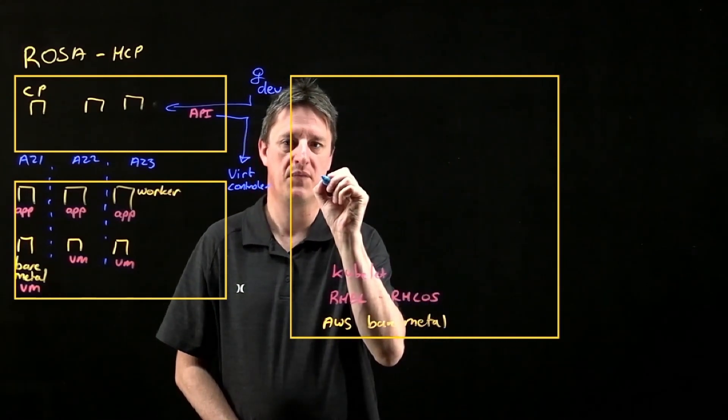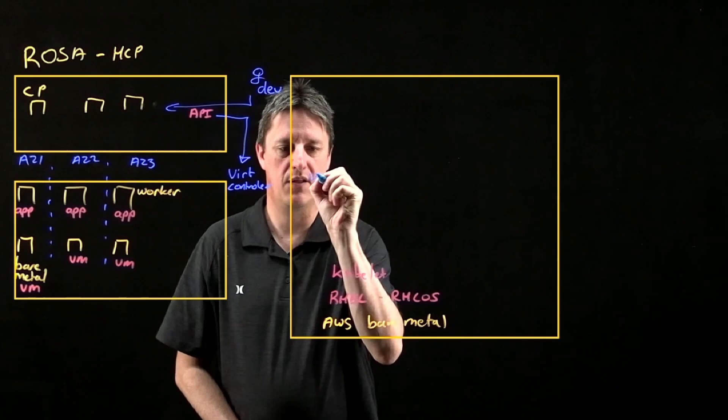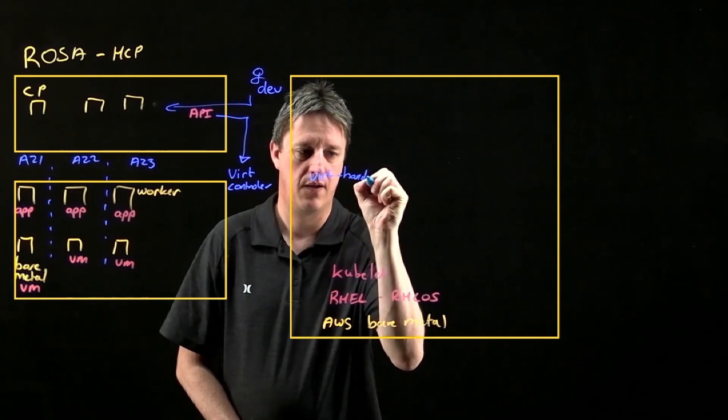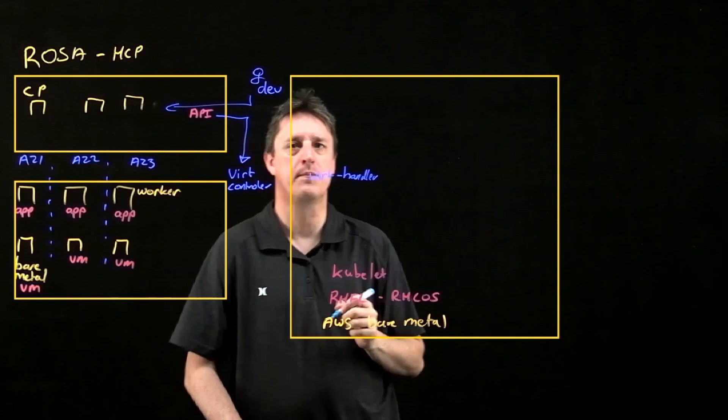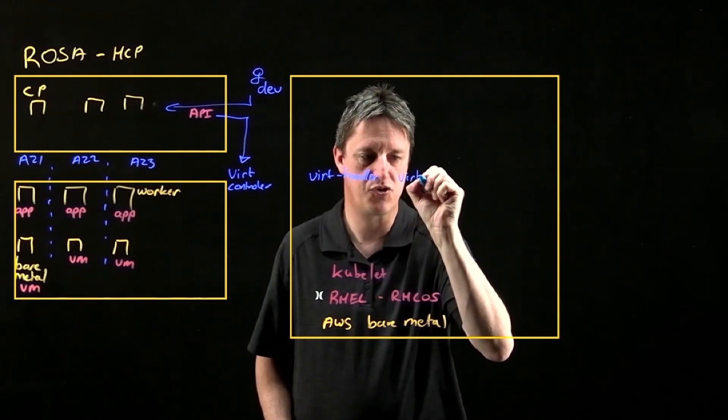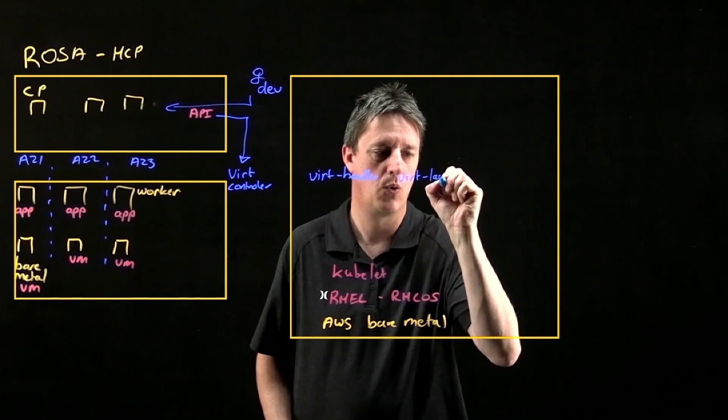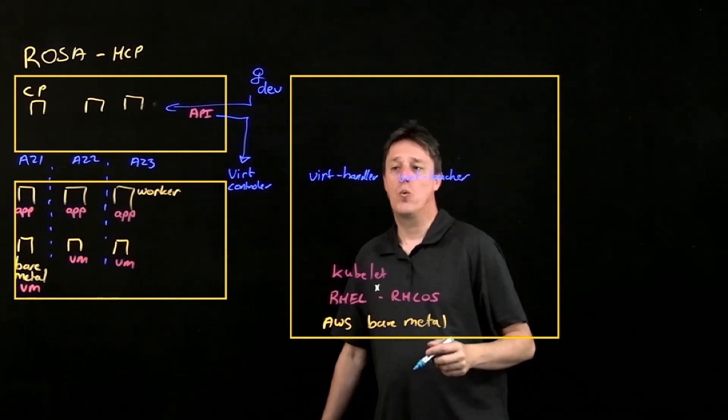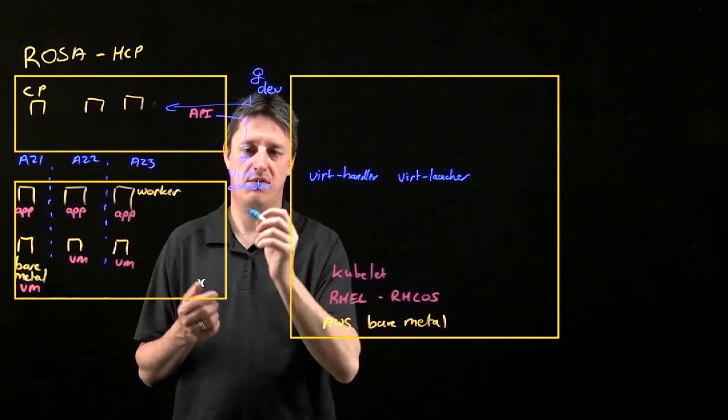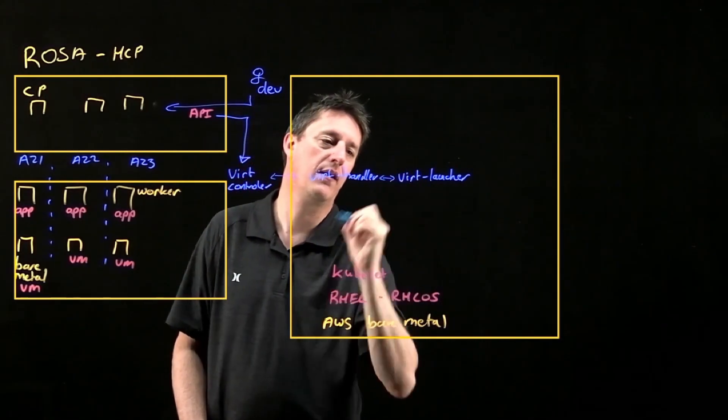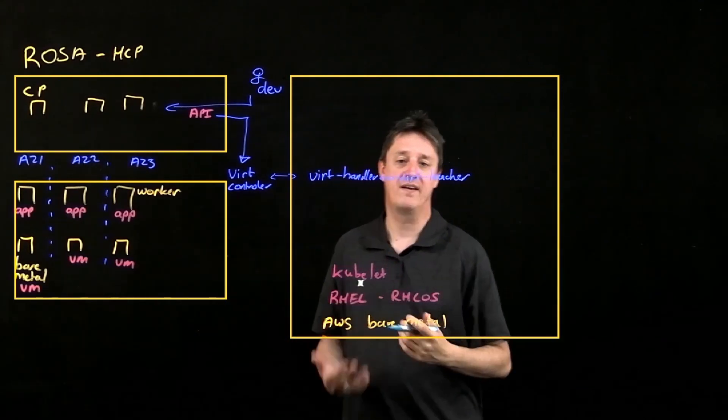On my node itself, we're going to find a couple of components. One of them being the virtualization handler. We will see another component called the virtualization launcher. What we will see is the virtualization controller, the vert handler and vert launcher working in tandem with each other.